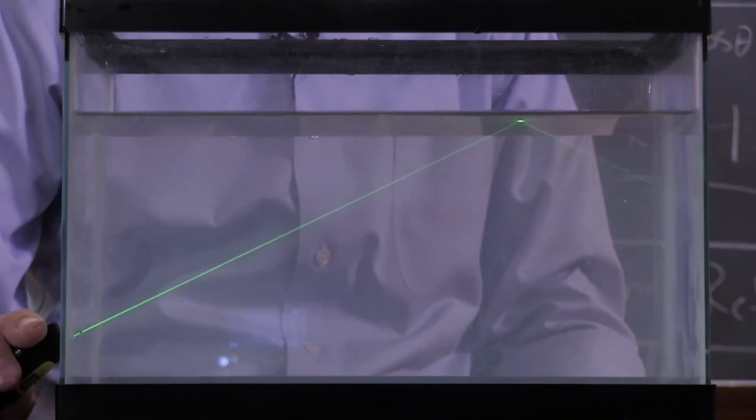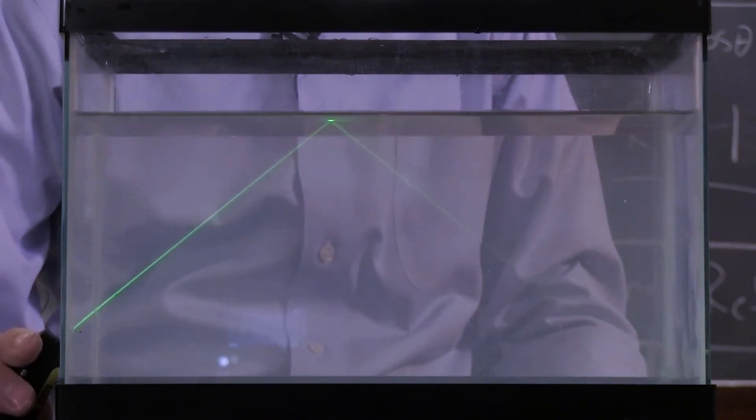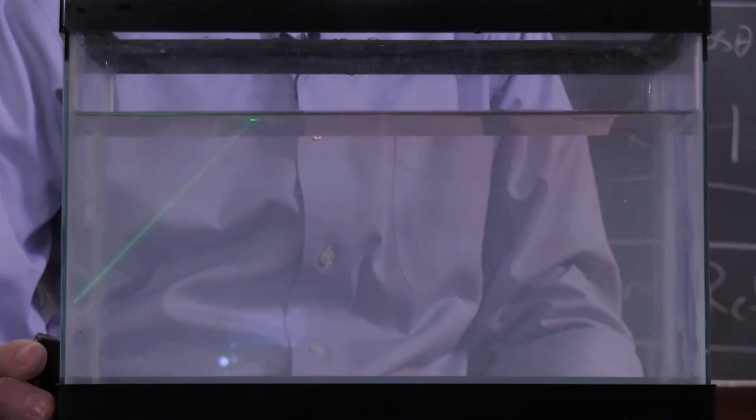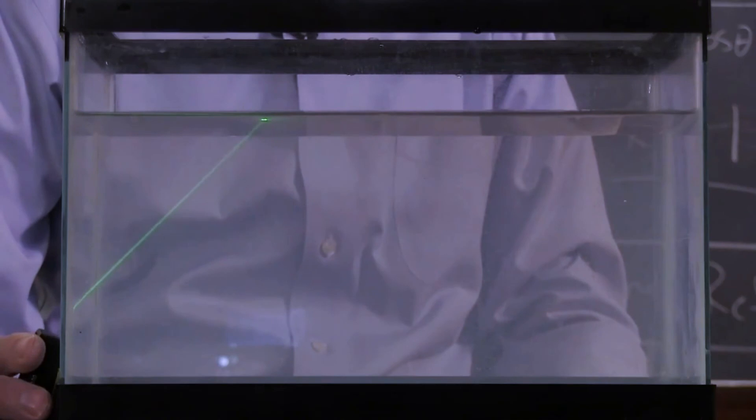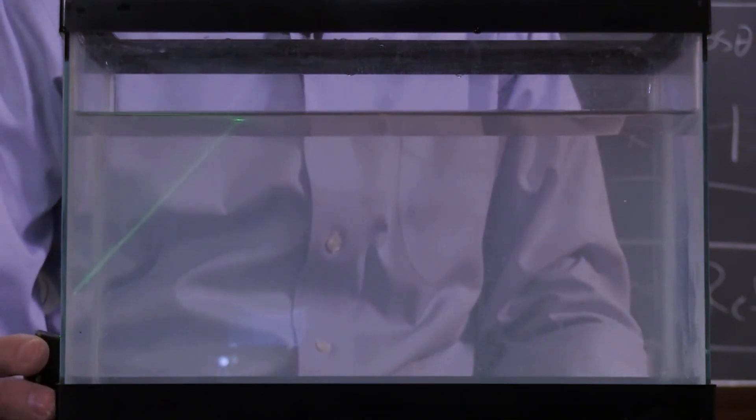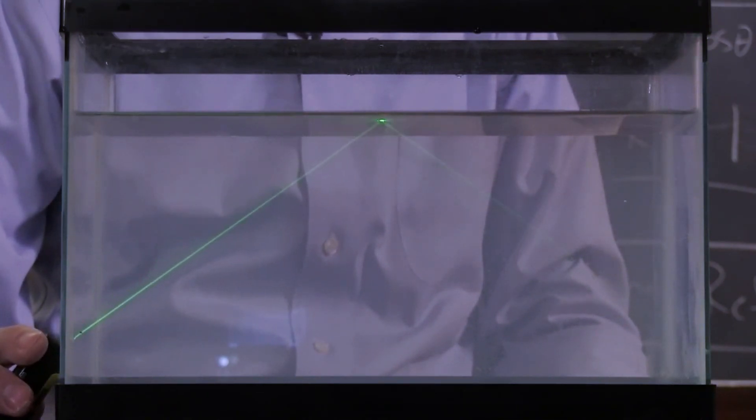And then, once you have total internal reflection, it stays very strong. It's not changing in intensity as I go across there. But it does suddenly go down as I come this way, okay? So, okay.